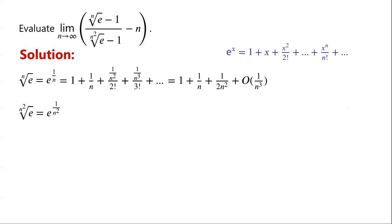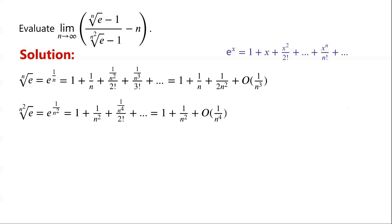Similarly, the n squared root of e can be written as e to the power of 1 over n squared. By applying the Taylor expansion, this equals 1 plus 1 over n squared, plus 1 over n to the power of 4 over 2 factorial, plus so on. Which can be written as 1 plus 1 over n squared, plus big O of 1 over n to the power of 4. Big O of 1 over n to the power of 4 represents all the remaining terms.